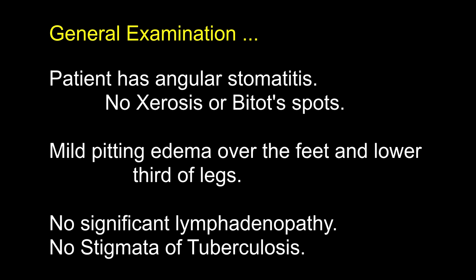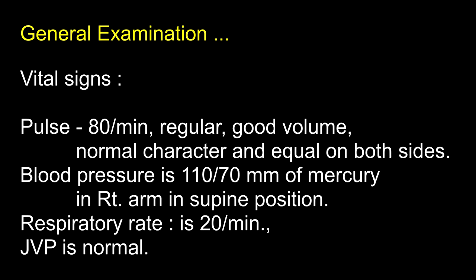No significant lymphadenopathy. No stigmata of tuberculosis. What does lymphadenopathy signify in a case of ascites? A matted lymphadenopathy in the neck or axilla would suggest tuberculosis as an etiological factor. Enlarged left supraclavicular nodes — Virchow's glands — would make one suspect intra-abdominal malignancy.